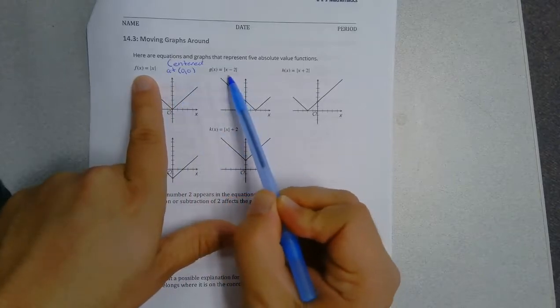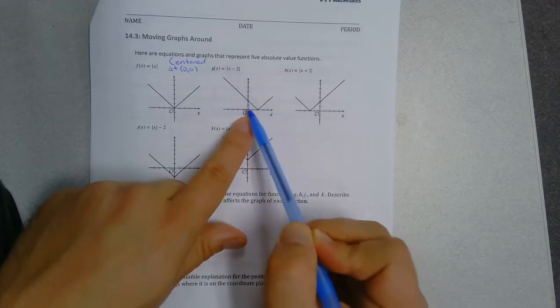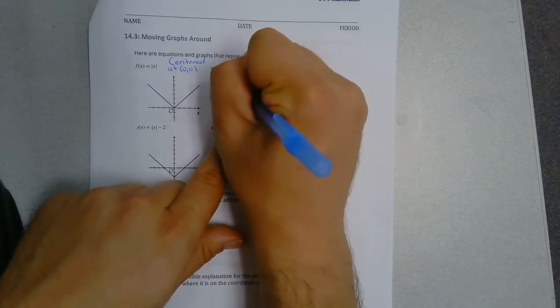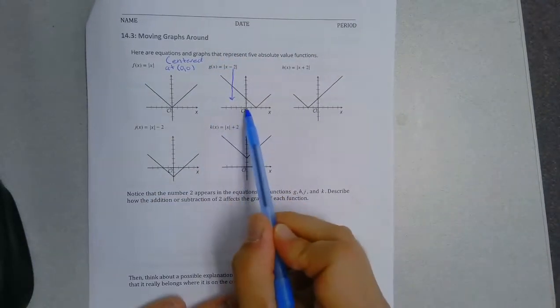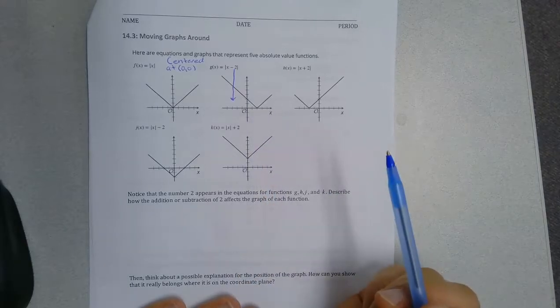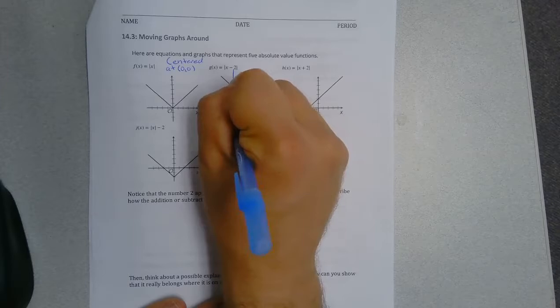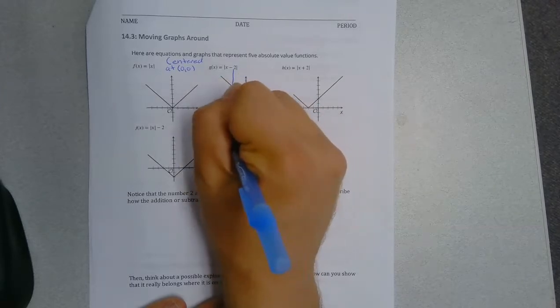Now, if inside the parentheses I subtract 2, look at the effect of that. The subtracting 2 moved the input two spots right on the x-axis. So I'm just going to write moved two spots right.